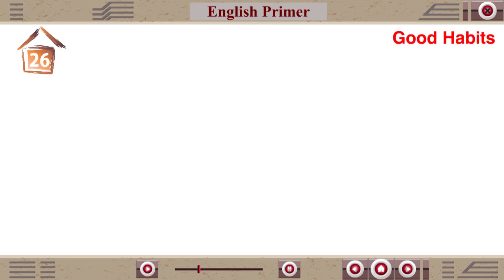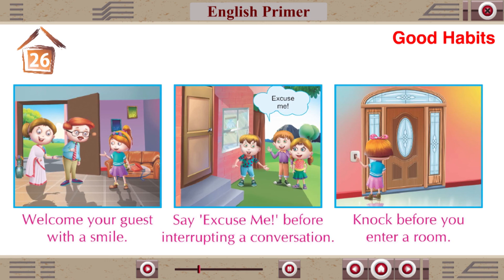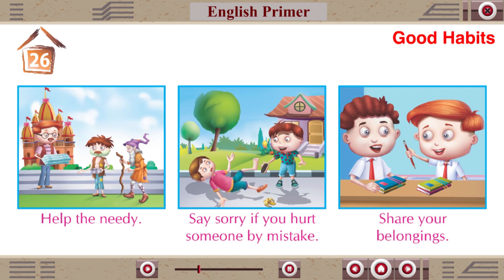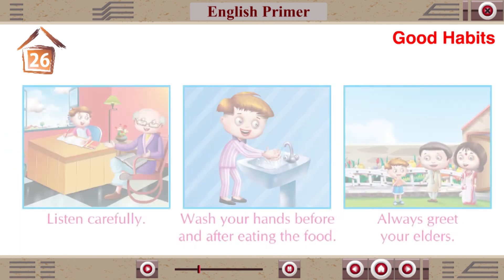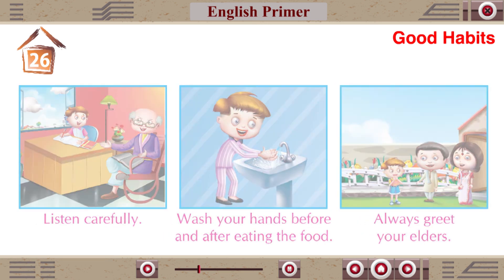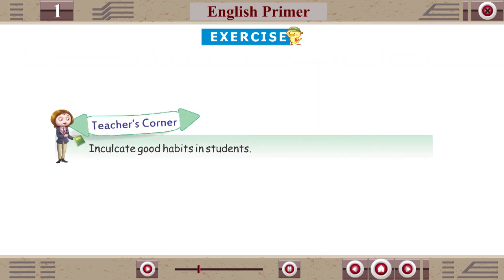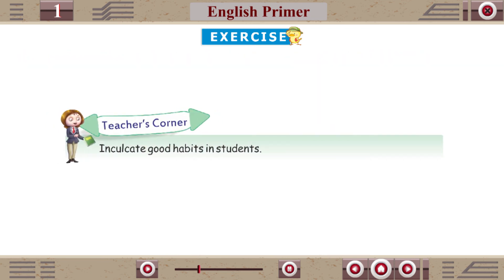Chapter 26: Good Habits. Welcome your guest with a smile. Say excuse me before interrupting a conversation. Knock before you enter a room. Help the needy. Say sorry if you hurt someone by mistake. Share your belongings. Listen carefully. Wash your hands before and after eating. Always greet your elders. Exercise: Look at the pictures and write the good habits we should follow. Teacher's Corner: Inculcate good habits in students.